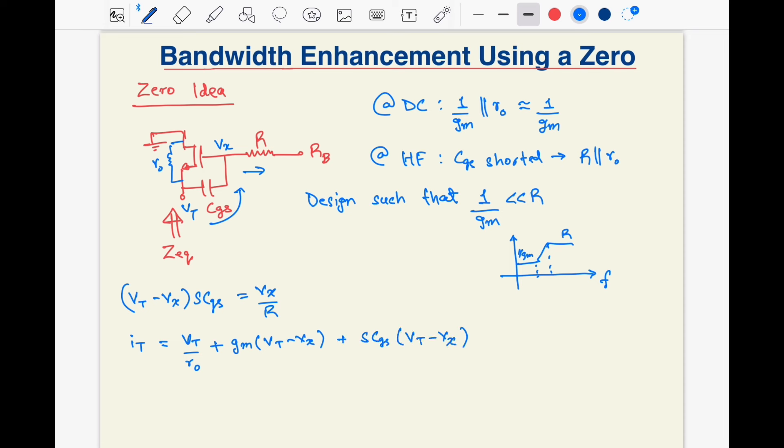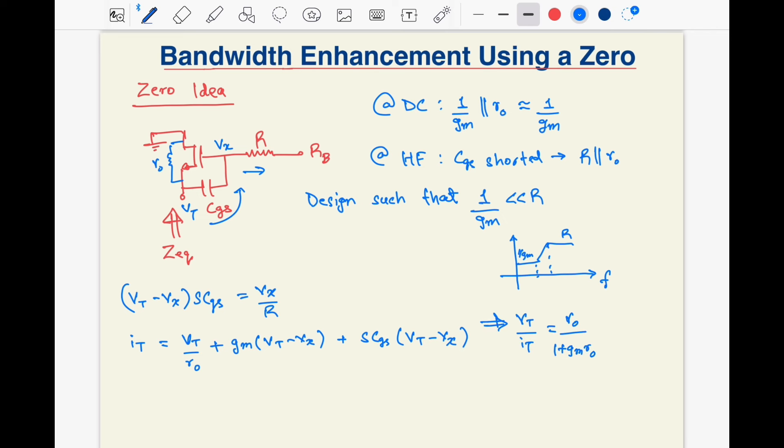Which would be of the form R node upon 1 plus gm R node, whole this whole thing multiplied by 1 plus sCGS R over 1 plus sCGS R plus R node over 1 plus gm R node. The impedance offered by the circuit is inductive and can be approximated as 1 by gm times sCGS R.